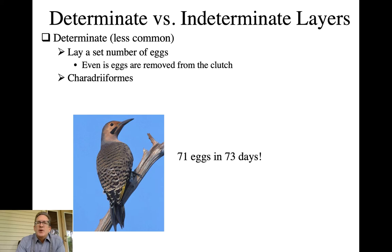There are a couple of terms used in ornithology to describe laying patterns in birds. Some birds are said to be determinate layers — the less common of the two — versus indeterminate. Determinate layers lay a set number of eggs. Meaning, if you remove one of the eggs from their clutch, they don't replace it. Shorebirds, for example, lay four-egg clutches; if you remove one, they're left with a three-egg clutch.